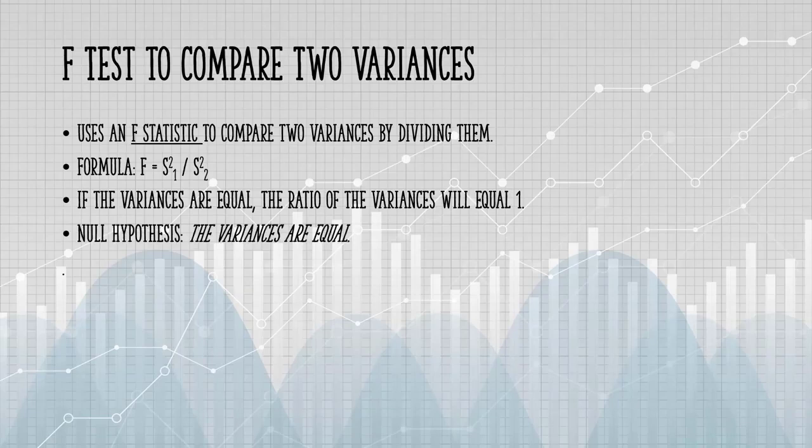You always test that the population variances are equal when running an F-test. Therefore, your null hypothesis will always be that the variances are equal.